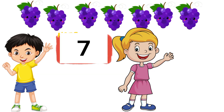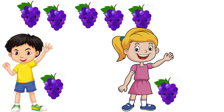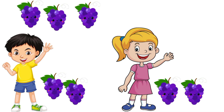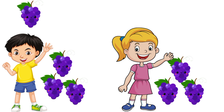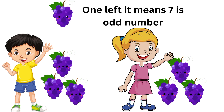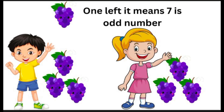Let's check the number seven with grapes. One to Sandy, one to Cody, one to Sandy, one to Cody, one to Sandy, one to Cody, and one left over. Sandy and Cody have the same number of grapes, but with one left over. That means that the number seven is odd.